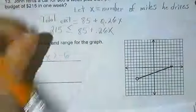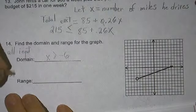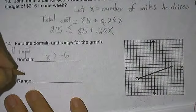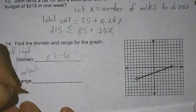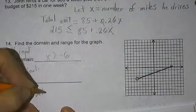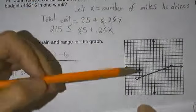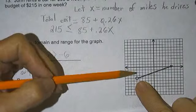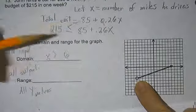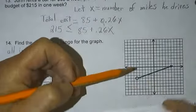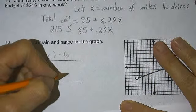My range is all possible values of y. So can y be negative 4? No, y has to be bigger than negative 4, but again it can go on forever. So y is greater than negative 4.